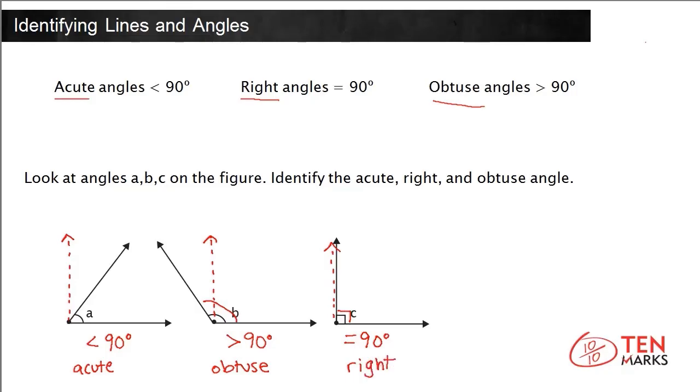Remember, angles are formed when two lines, rays, or line segments intersect. And angles can be classified based on their measures. Acute angles are less than 90 degrees, right angles equal 90 degrees, and obtuse angles are greater than 90 degrees.